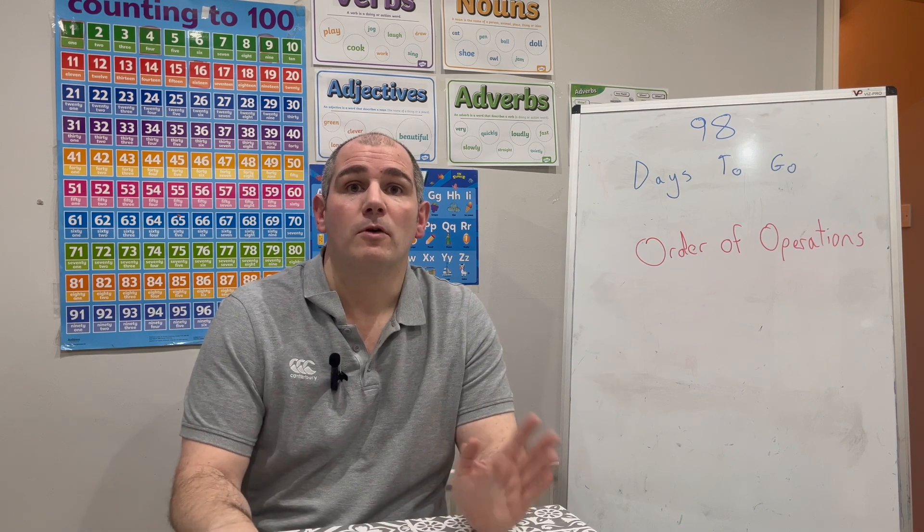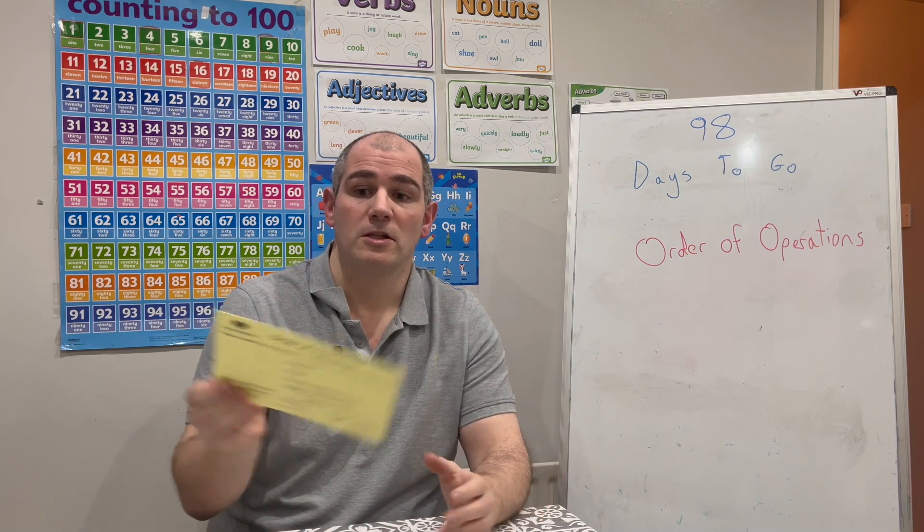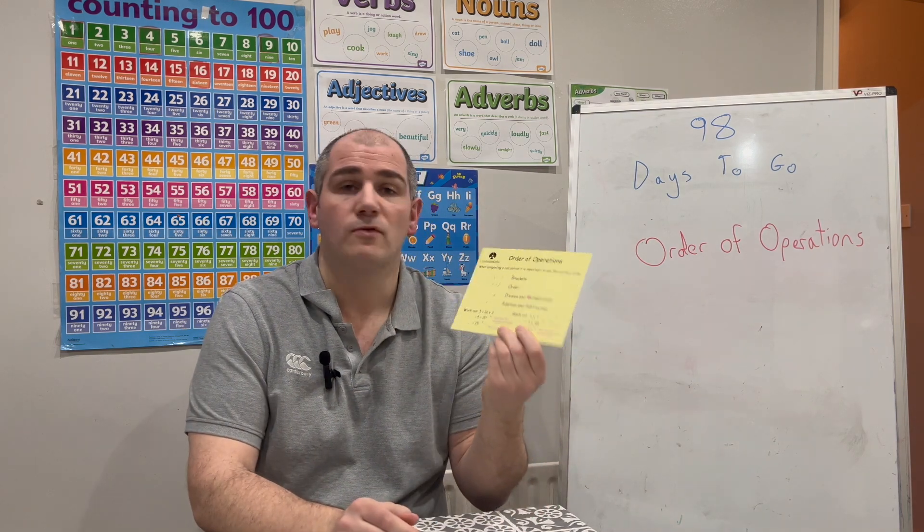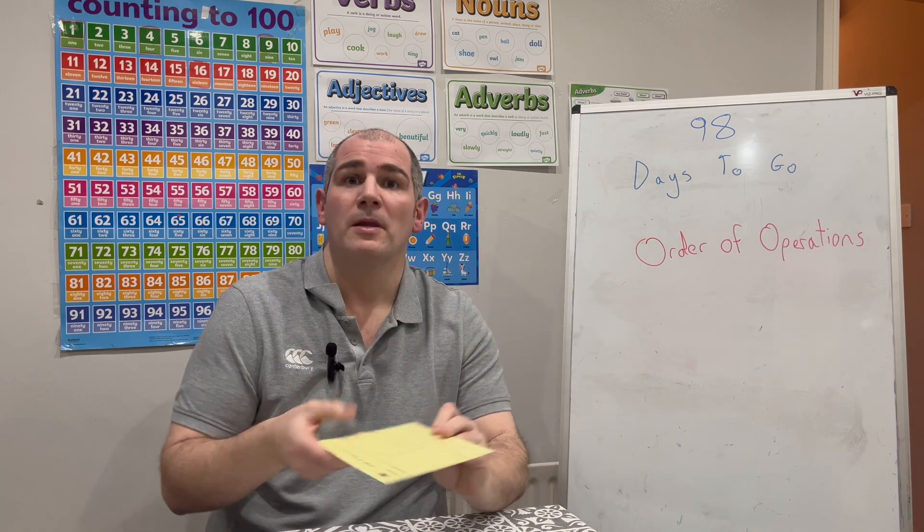So in this video we're going to focus on order of operations. If you do have the revision cards, card 41 is the order of operations revision card, so that might be quite useful for you as well.